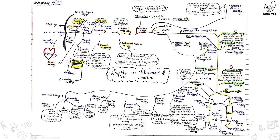The lumbar arteries are six in pairs. From the abdominal aorta, only five pairs of lumbar arteries are given, and the sixth pair is given by the internal artery. These five pairs supply the abdominal wall — specifically the lateral wall and dorsal wall of the abdomen.